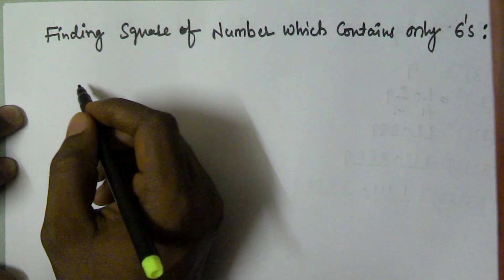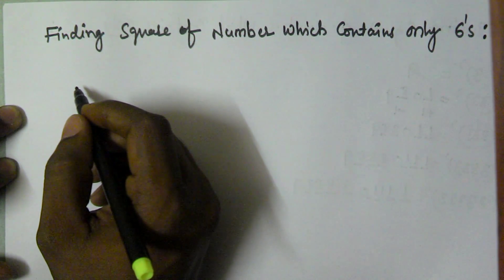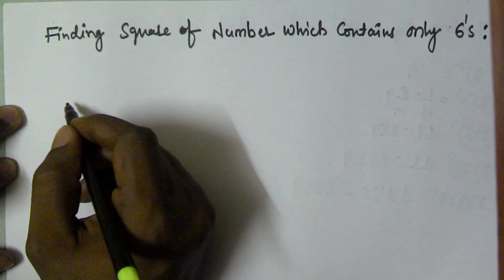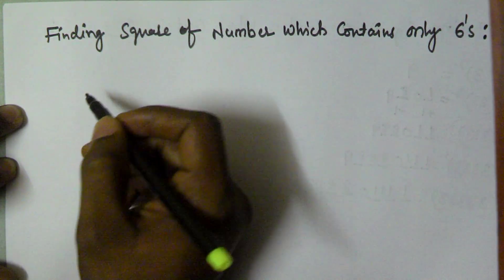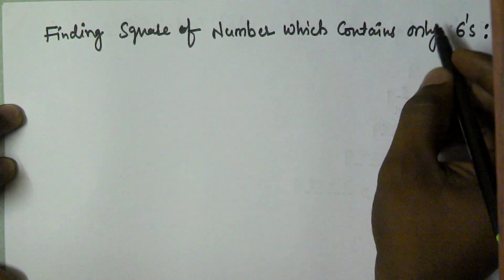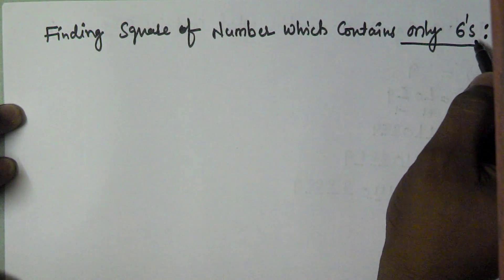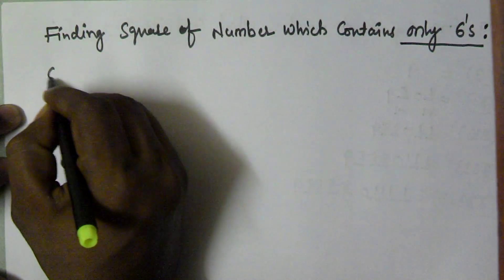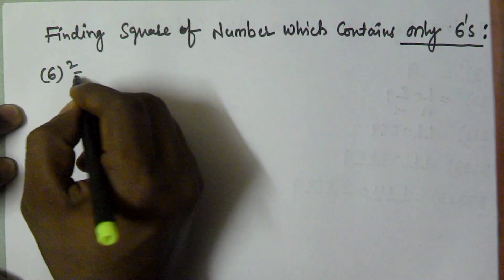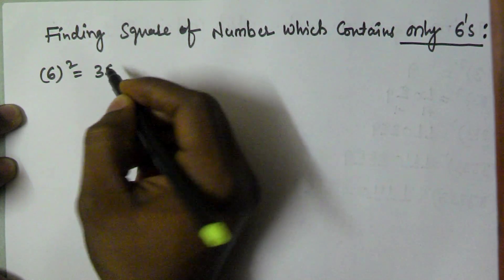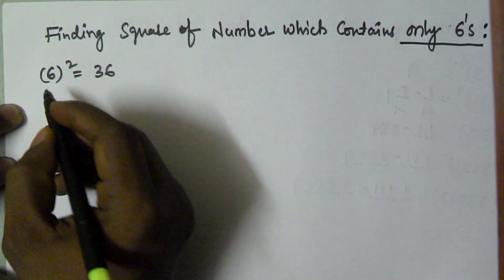Hello friends, in this video I am going to show you how to find or remember the square of numbers which contains only 6s. 6 square is 36, it is very easy. You should remember the next one is 66 square.